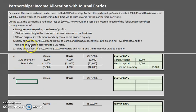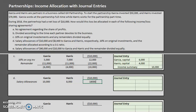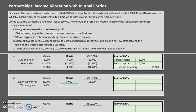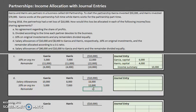Now scenario D gets a bit more complicated: salary allowances, then 10% on original investments, then the remainder according to a 3-to-1 ratio. First, the salary allowances of $10,000 for Garcia and $8,000 for Harris — we've allocated $18,000 so far. Next, 10% on original investments: 10% of $50,000 is $5,000 and 10% of $70,000 is $7,000 — a total of $12,000. Now let's deal with the remainder.